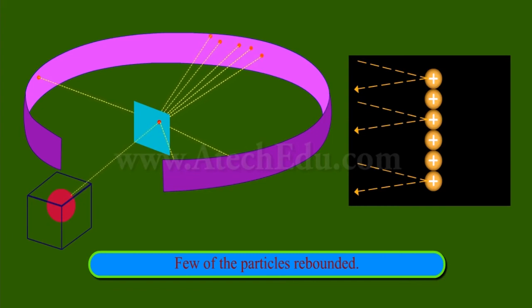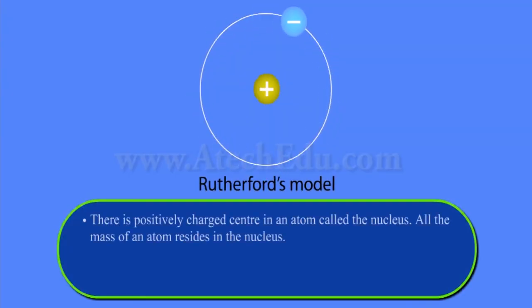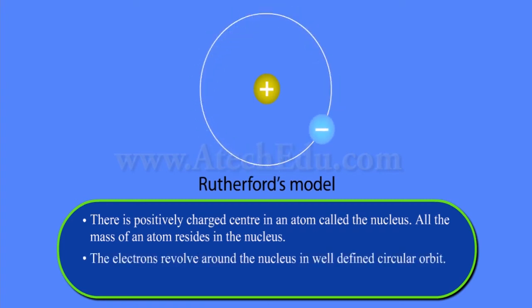This means that the positive charge of the atom occupies very little space. Few of the particles rebounded. The particles which were deflected by 180 degrees indicated that all the positive charge and the mass of the gold atom were concentrated in a small volume within the atom.